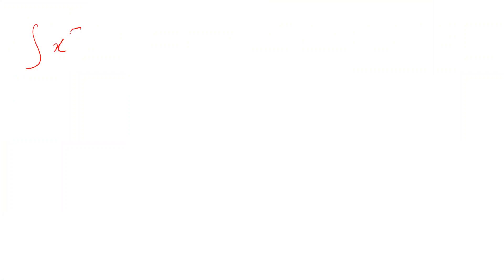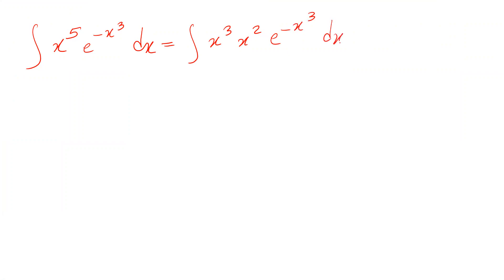Hi, I'm going to show you how to calculate the integral of x⁵ times e with the power of minus x³ dx. You can rewrite this integral as x³ times x² times e with the power of minus x³ dx.